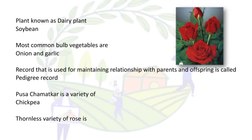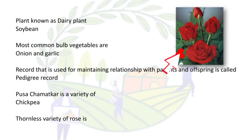Pusa Chamatkar is a variety of chickpea. The thornless variety of roses is called Chitra.